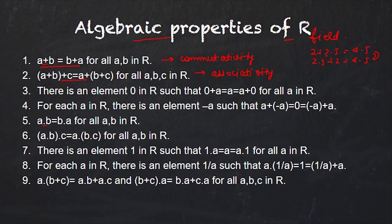The third property is there is an element 0 in R such that 0 + a = a + 0 = a. We all know 0 belongs to R, and if you add any real number to 0 you get the same number back. This 0 is called the additive identity.